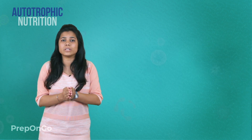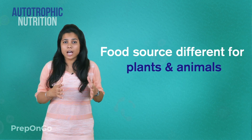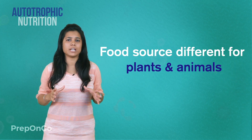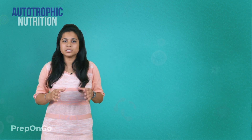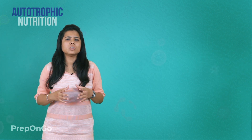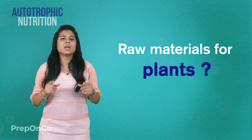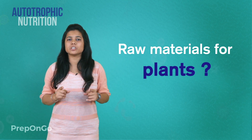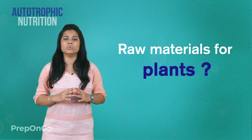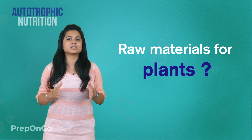The nutrition which plants are obtaining comes from the food. The food sources are different for different organisms. Unlike animals, plants do not eat vegetables or flesh. So what is the raw material which plants use to make their own food? Another question is: why are only plants capable of making food and not animals? We will be answering these questions in this video.